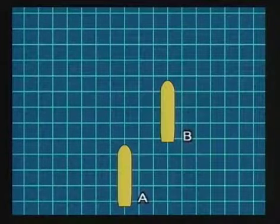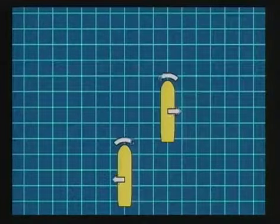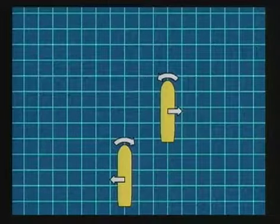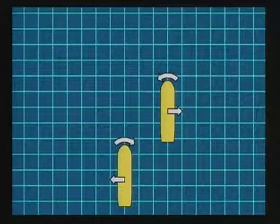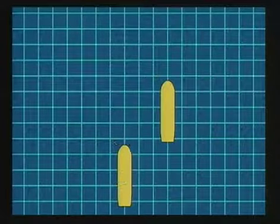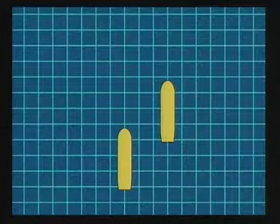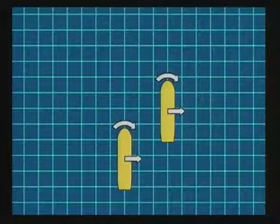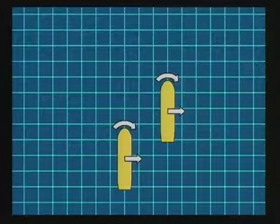The effects will be like these when the bow of ship A overtakes the stern of ship B. When ship A advances a third to a quarter of its length from the stern of ship B in parallel, the effects change like this.